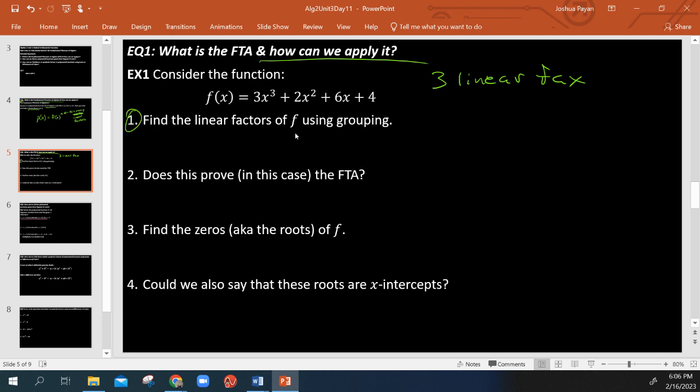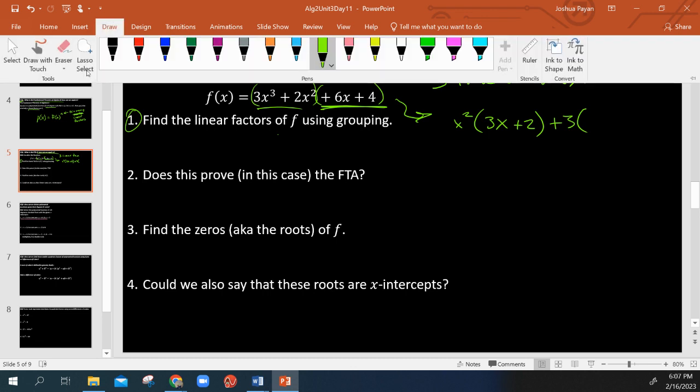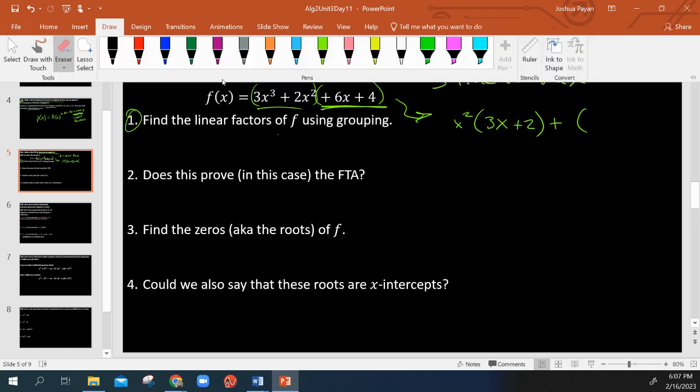This is set up where I can group this out pretty nicely. The GCF on the left term—actually, my GCF would just be x squared, and that's going to leave me with 3x plus 2. And here on the right, the GCF is 2, which leaves me with 3x plus 2.